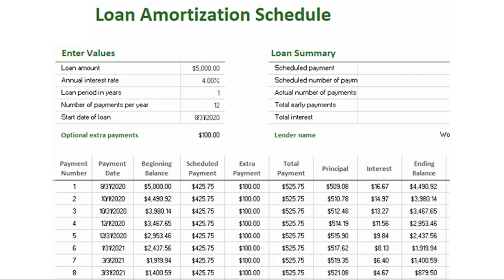Amortization: this is the spreading out of a loan and interest payment into a series of fixed installment payments. An amortization schedule identifies the total amount of the periodic payment, the portions of interest, the principal repayment, and the remaining balance of the loan. You can browse through our channel for a video on how to create an amortization schedule.